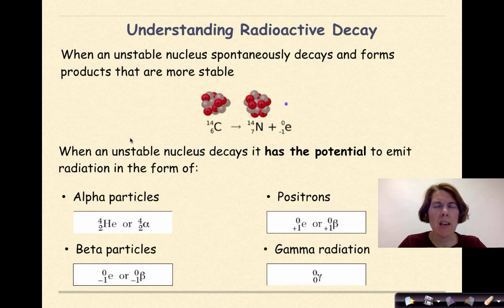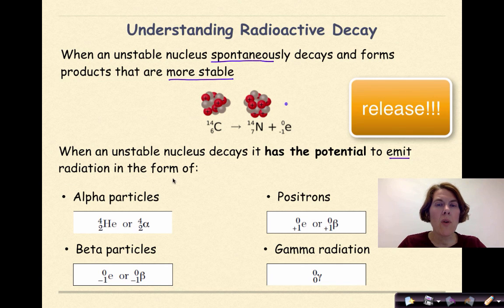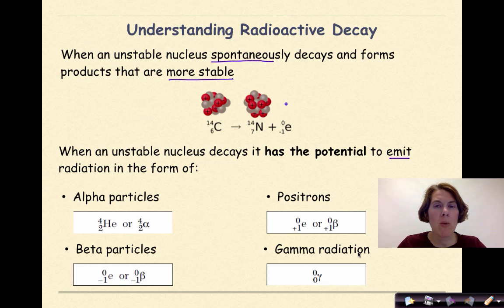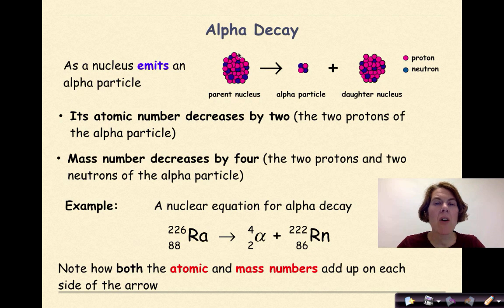What is radioactive decay? Radioactive decay is when an unstable nucleus spontaneously decays and forms products that are more stable. Remember, stability with nuclei means that our proton to neutron ratio will be closer to one to one. When an unstable nucleus decays, it has the potential to emit, which is just a fancy word for release, radiation in the form of alpha particles, beta particles, positrons, and gamma radiation.